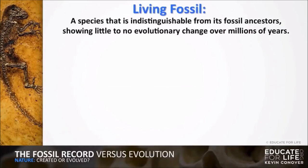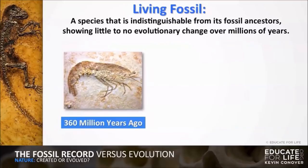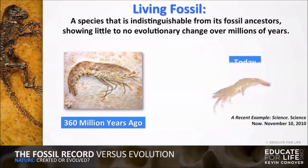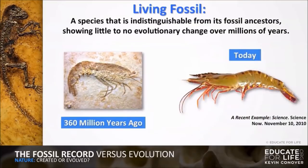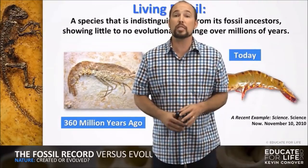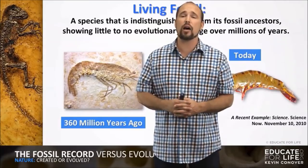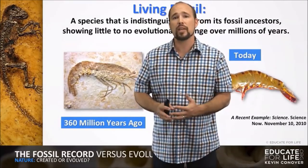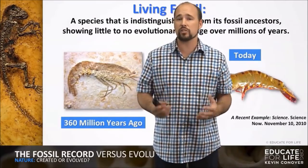Another example is a shrimp fossil recorded in Science Magazine, November 10, 2010. They have a shrimp fossil here, 360 million years old, and we have a shrimp today — they look exactly the same. Why are we seeing no evolution? Maybe it's because evolution is a bad hypothesis, a bad theory, and we don't have evidence to support it.